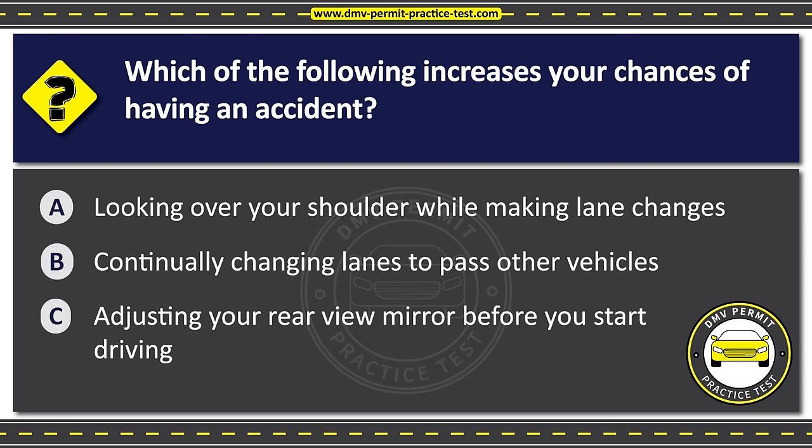Question twenty-seven. Which of these vehicles must stop before crossing railroad tracks? Option A: Tank trucks marked with hazardous materials placards. Option B: Motor homes or pickup trucks towing a trailer. Option C: Sport utility vehicles carrying four or more persons. The correct answer is Option A: Tank trucks marked with hazardous materials placards.